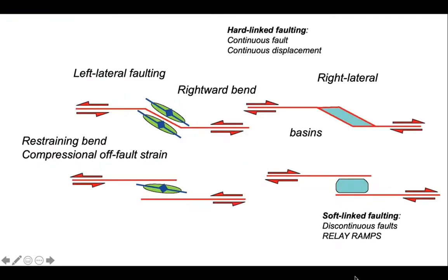That's a brief review of some continental transforms showing bends and overlaps. Understanding their geometry requires understanding three things: first, the degree of hard linking — are we dealing with a single through-going fault that conserves displacement, or discrete fault segments? Second, are we dealing with right-stepping or left-stepping geometries? And finally, we need to consider the kinematics — left-lateral or right-lateral behavior. It's the interplay of those three factors that gives rise to the structural styles associated with strike-slip faults.